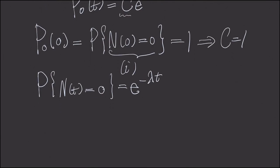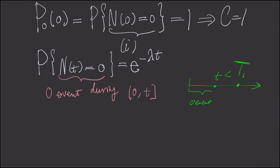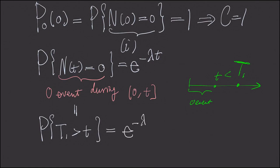To find the constant c, we use the straightforward observation: p₀(0) = P(N(0) = 0). By condition 1, N(0) = 0 with probability 1, so p₀(0) = 1, which gives c = 1. Therefore, P(N(t) = 0) = e^(−lambda·t). Interpreting this: N(t) = 0 means no events in [0, t], which means the first arrival time T1 is greater than t. So P(T1 > t) = e^(−lambda·t).